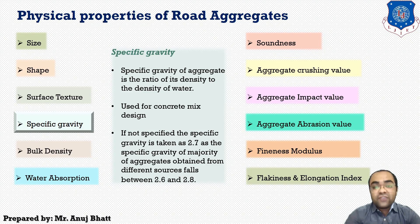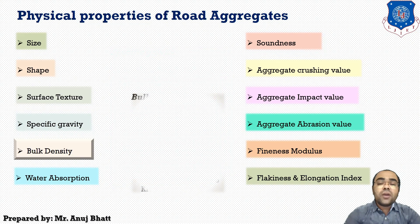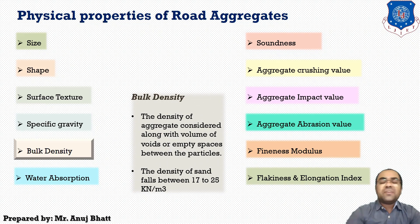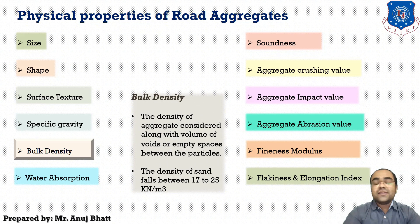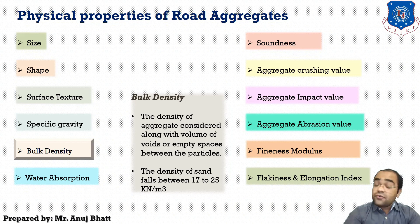On an average we can consider the specific gravity as 2.7. Now if we talk about bulk density, bulk density refers to the density of aggregate considered along with the volume of voids or empty spaces between the particles. The density of sand, that is fine aggregate, falls between 17 to 25 kN per meter cube.